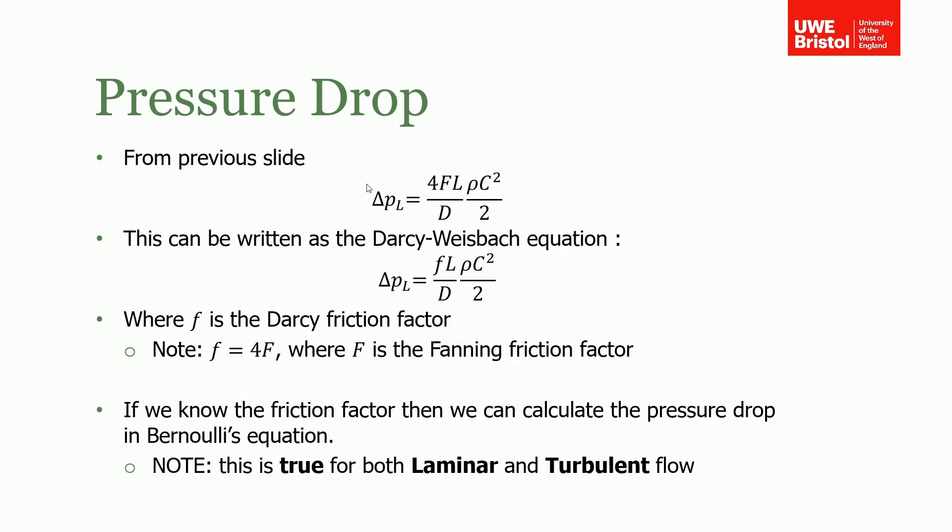This can also be written as the Darcy-Weisbach equation. One important thing to notice is that Darcy used his own friction factor, lowercase f. It should be noted that the Darcy friction factor is four times the Fanning friction factor. So here we've got a relationship where we can work out the pressure loss down a pipe if we can find this friction factor.